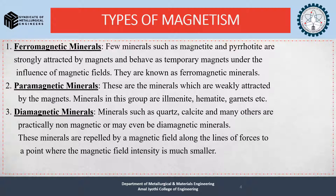Paramagnetic minerals are weakly attracted by magnets. Minerals in this group include ilmenite, hematite, garnets, etc. Diamagnetic minerals such as quartz and calcite are practically non-magnetic or may even be diamagnetic. These minerals are repelled by a magnetic field along the lines of force to a point where the magnetic field intensity is much smaller.